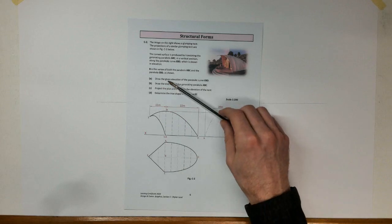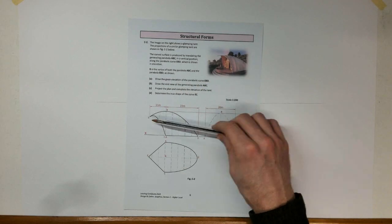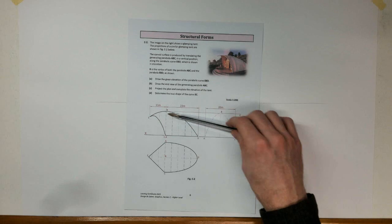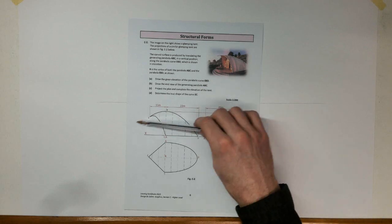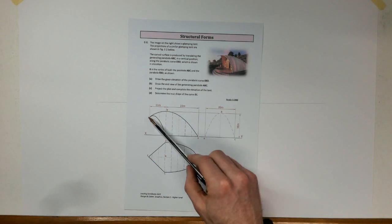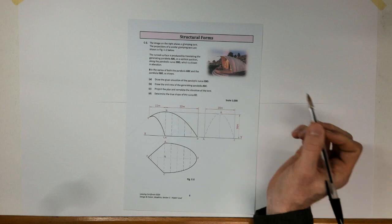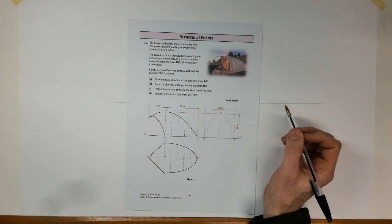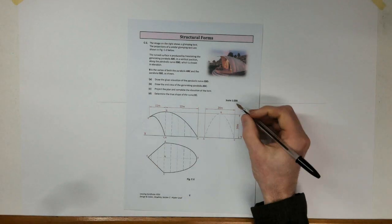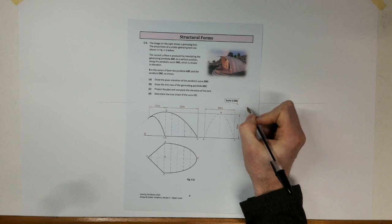Draw the given elevation of the parabola curve EBD — they want us to draw this portion of the parabola curve to begin with. The parabola would extend down like so. So just looking at this, we've got a scale that we need to work with.